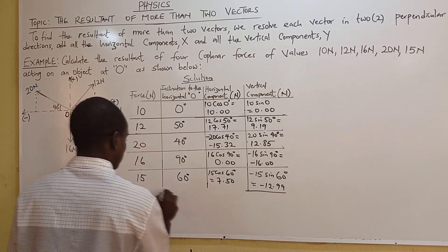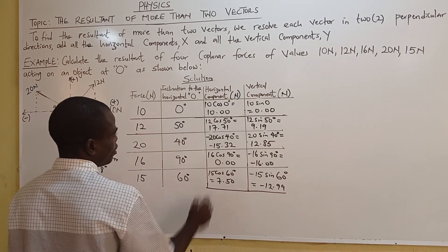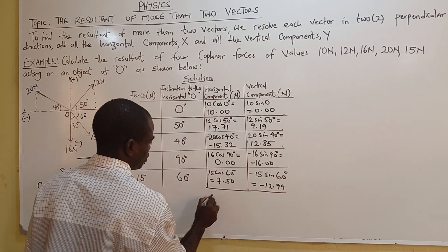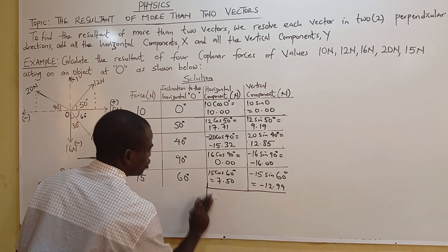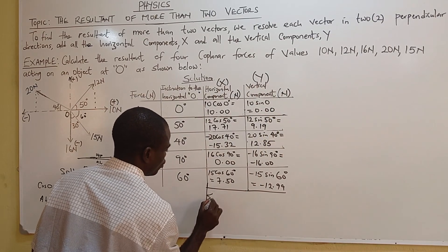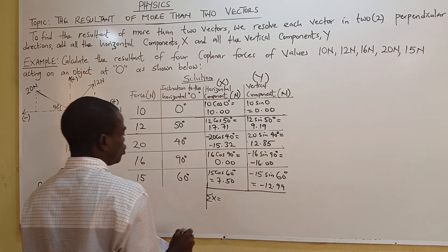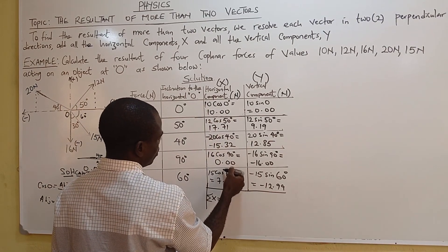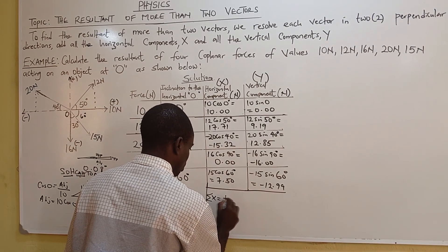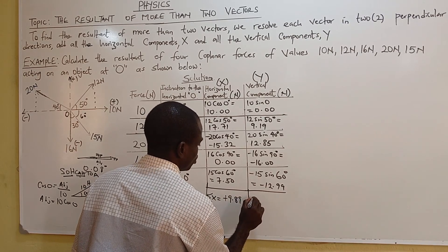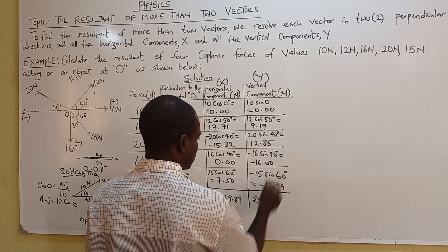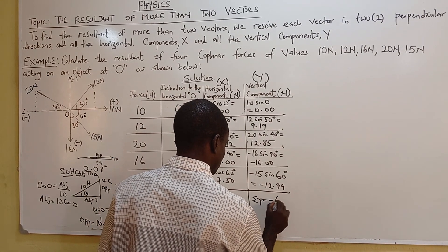Now we resolve by summing all horizontal components (call it ΣX) and all vertical components (call it ΣY). Adding all horizontal components and accounting for negatives gives ΣX = +9.89N. Adding all vertical components and removing those that are negative gives ΣY = −6.95N.